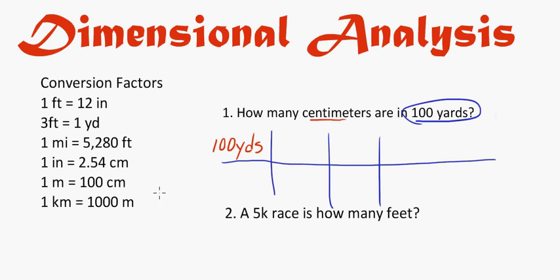According to my conversion factors, I don't have a direct conversion from yards to centimeters, so I'm going to have to do a couple steps. I can go from yards to feet, then from feet to inches, and then from inches to centimeters. The first step will be to take 1 yard equals 3 feet and figure out where to put it. You're canceling out the units — what you're looking at is basically a large fraction, with the numerator on top and the denominator on the bottom.